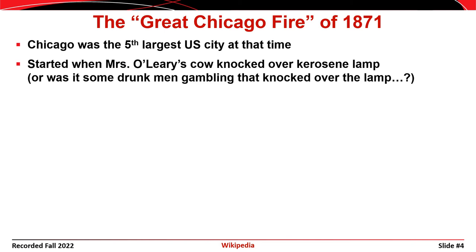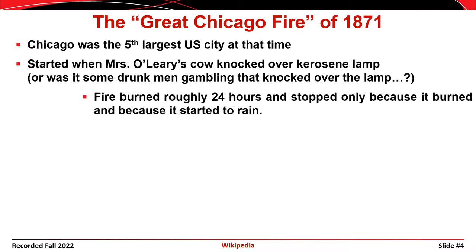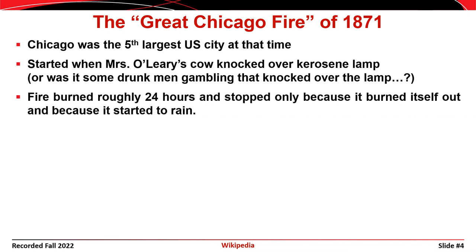At the time, Chicago was the fifth largest city in the U.S. The prevailing theory is that the fire started when a cow knocked over a kerosene lamp in a barn, but another theory suggests that this was just an alibi for a group of drunk men that were gambling when they actually knocked the lamp over themselves. The fire burned for roughly 24 hours and stopped only because it started to rain and because the fire ran out of fuel. Those of you familiar with Chicago know that the downtown area is bounded on the east side by Lake Michigan and is bounded on the west side by the Chicago River.